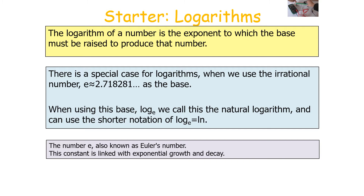So we have two special cases of logarithms we tend to use in physics: log to the base 10, which we just call log, and log to the base E, which we call natural log and write as LN.